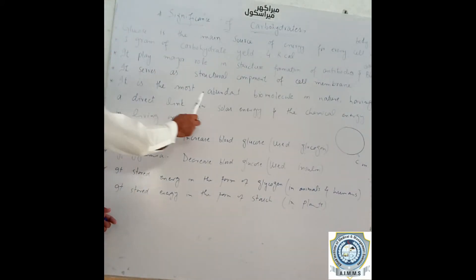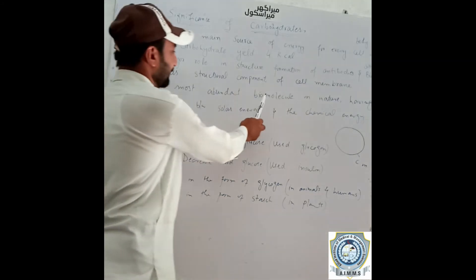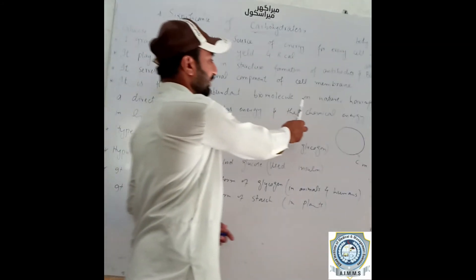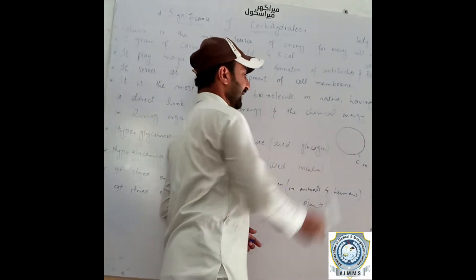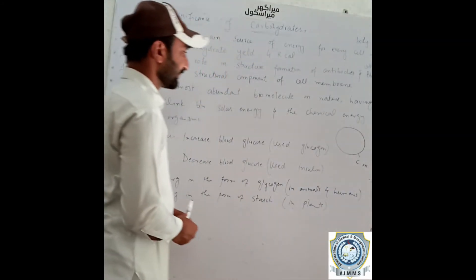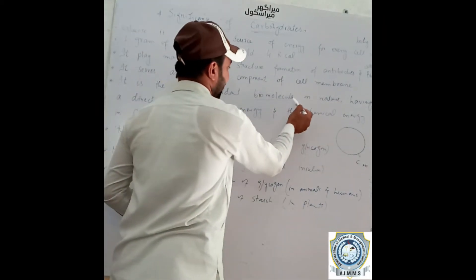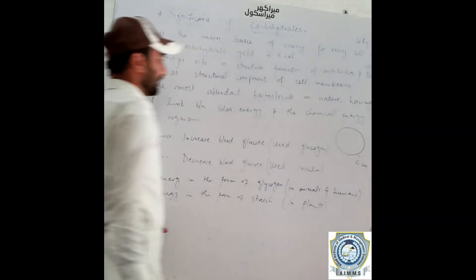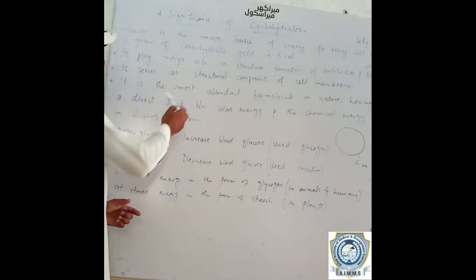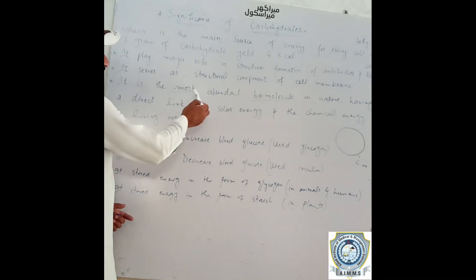Carbohydrates are the most abundant bio-molecule in nature. They are found as bio-molecules, and nature bonding makes them the most abundant organic compounds.